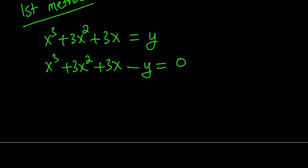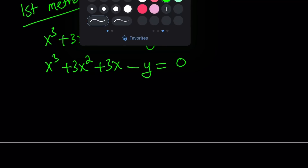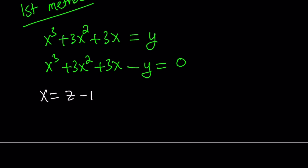So how do you solve cubic equations? You get rid of the term with x squared. To get rid of the x squared term, you replace x with something — in this case, x must be replaced with z minus 1. The reason we subtract 1: take the coefficient of x squared and divide by negative 3. Negative because it has to be, and 3 because it's the degree. So 3 divided by negative 3 gives negative 1. Let's go ahead and do it and see what happens.